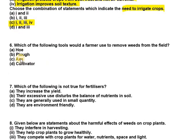Question six: which of the following tools would a farmer use to remove weeds from the field? Options are hoe, plow, axe, and cultivator. The right option is hoe. A hoe is used to pull out weeds from the field.